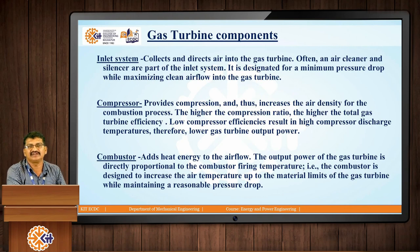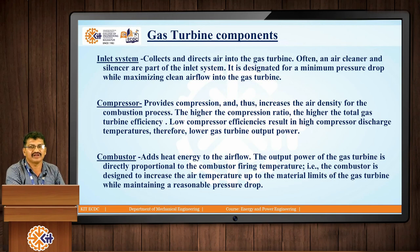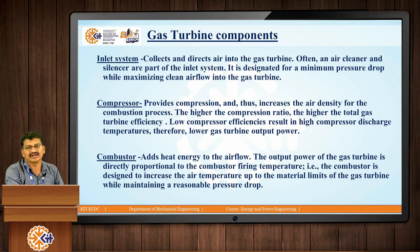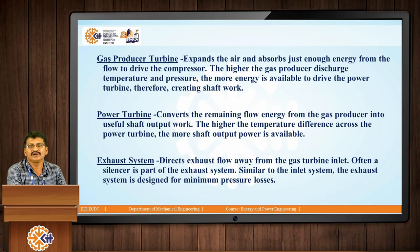The systems include an inlet system where cold air is taken inside, a compressor where air is compressed with a proper compression ratio, then the combustor, and the gas producer turbine. A power turbine and exhaust system are also present. These are the main systems of the gas turbine power plant.